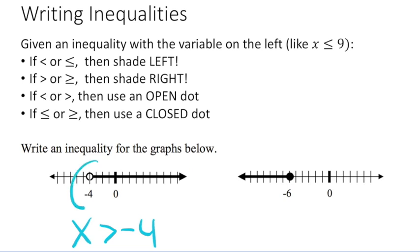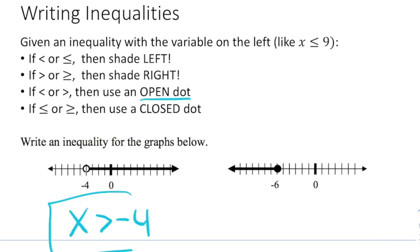And now we have to ask ourselves, are we or equal to, or not? Well it's an open dot. And remember, open dot means that there's no line underneath. So x is greater than negative 4 is the inequality that goes with this graph.